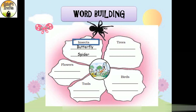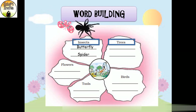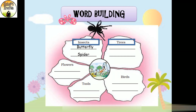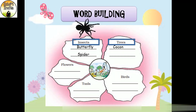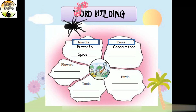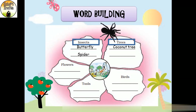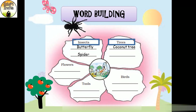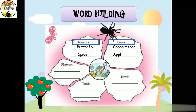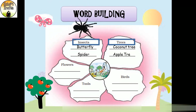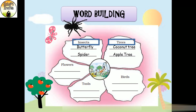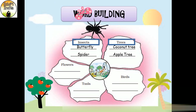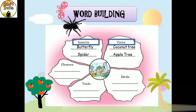Now let's talk about trees. This one is a coconut tree — C-O-C-O-N-U-T, coconut, T-R-E-E, tree. And this is an apple tree — A-P-P-L-E, apple, T-R-E-E, tree. You can also write other tree names like banyan tree, peepal tree, neem tree, or oak tree.